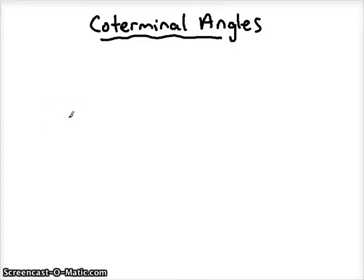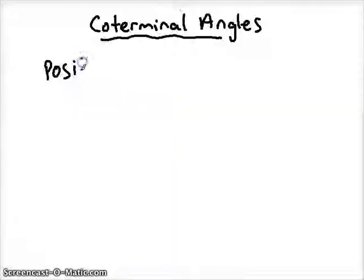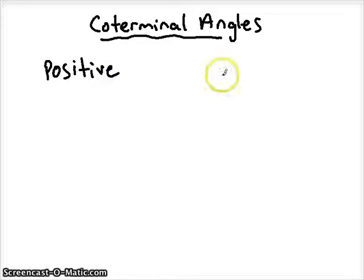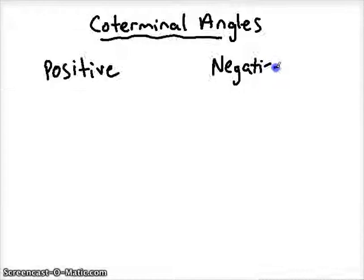In this video, I'm going to explain what coterminal angles are and how we can find a couple examples of each. We're going to have a positive coterminal angle, and those are going to always be positive angles. And we'll also have negative coterminal angles, and those angles will always be a negative angle.